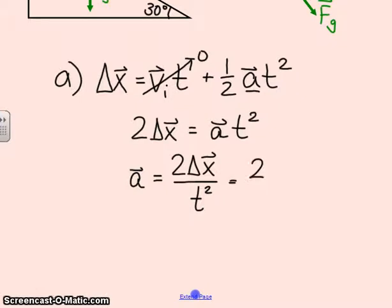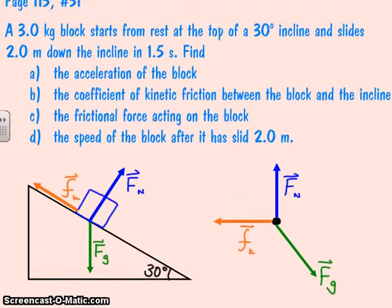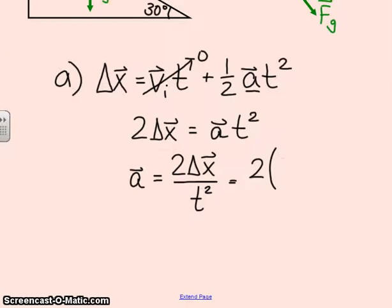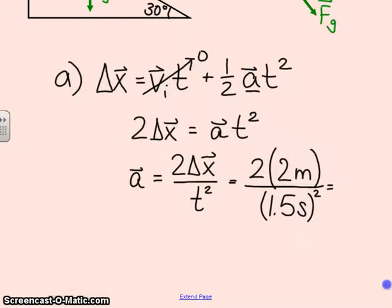I can plug numbers in. Coming back at the problem, delta x is 2 meters, time is 1.5 seconds. We square this 1.5 seconds in the denominator, and we get 1.78 meters per second squared. So that's our answer to part A.